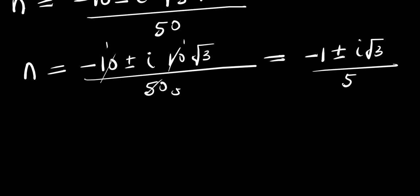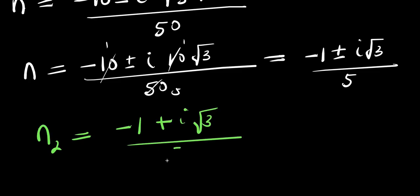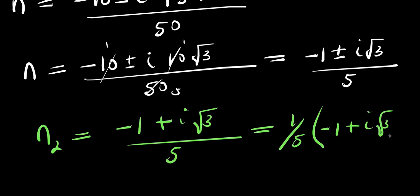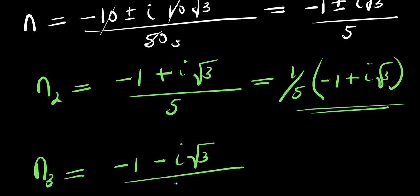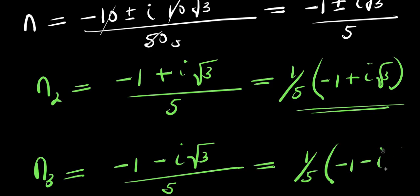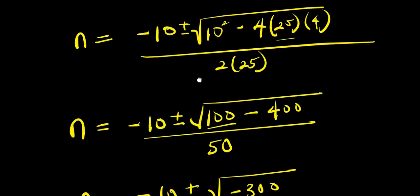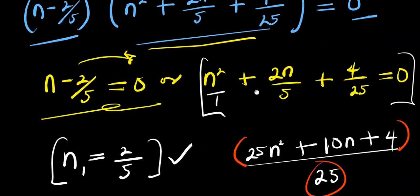So from here we can have two complex solutions for n. We have n₂ equals negative 1 plus i√3, divided by 5, which is the same as (1/5)(−1 + i√3). And also n₃ equals negative 1 minus i√3, divided by 5, which is the same as (1/5)(−1 − i√3). So we have two complex solutions and one real solution, which is 2/5.